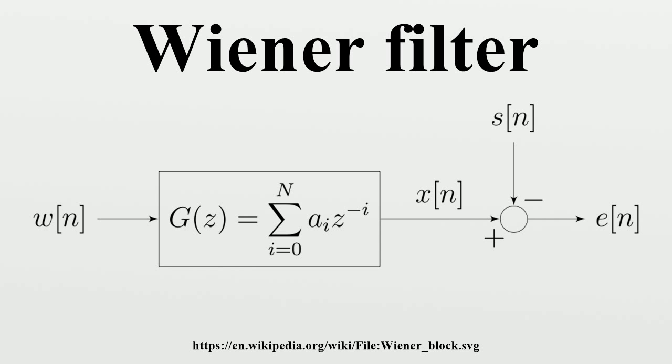Wiener filters are characterized by the following: Assumption - Signal and noise are stationary linear stochastic processes with known spectral characteristics or known autocorrelation and cross-correlation. Requirement - The filter must be physically realizable, causal. Performance criterion - Minimum mean square error. This filter is frequently used in the process of deconvolution. For this application, see Wiener deconvolution.